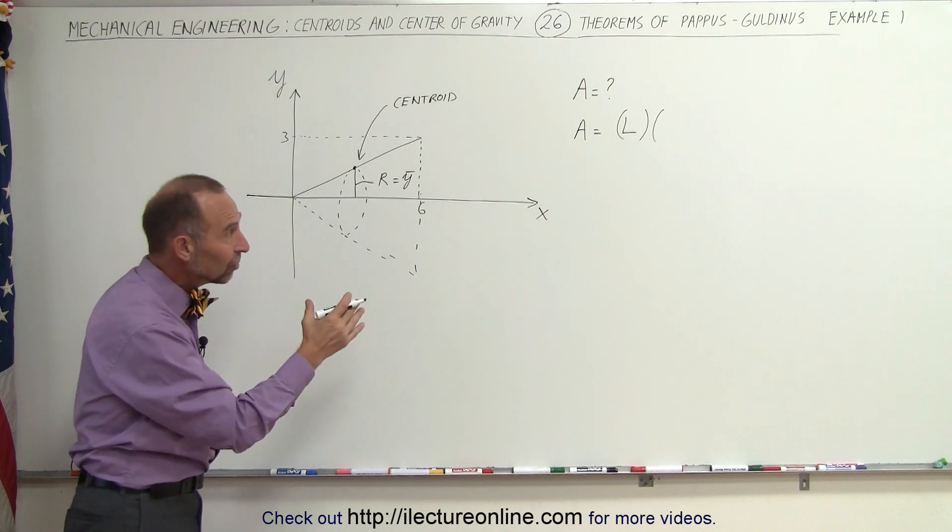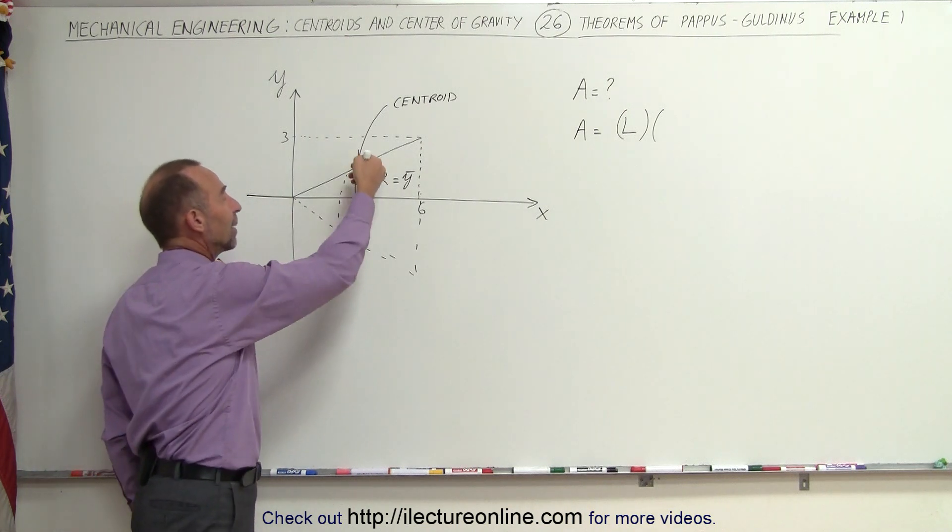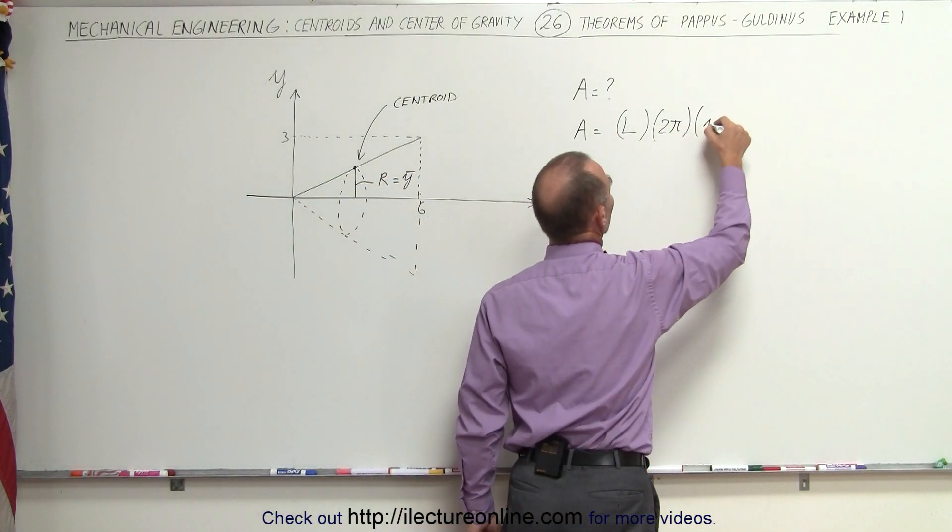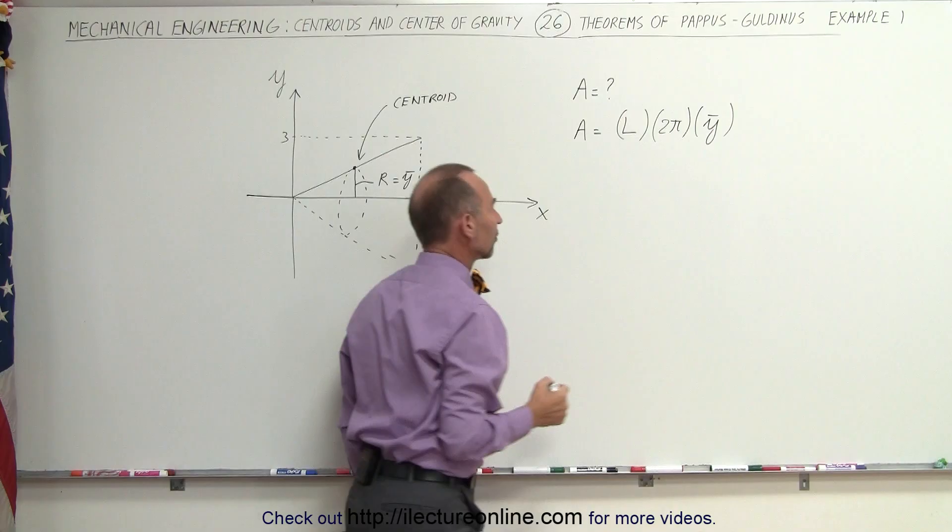And so it will be the length of the line segment times the distance covered, which is equal to 2π times the radius, and the radius is equal to the y-coordinate of the center of mass.